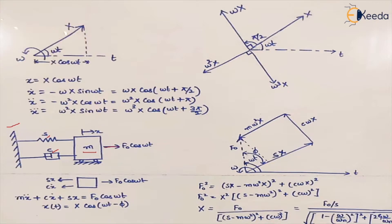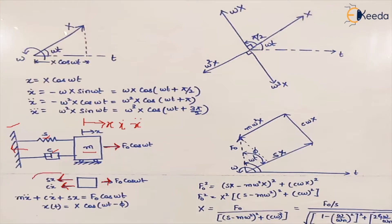If a harmonic force F₀ cos(ωt) is applied on this mass in this direction, displacement from the equilibrium position takes place in this direction, and this is also the direction for velocity and acceleration. Drawing the free body diagram, the spring force acts in the opposite direction and the damping force also acts in this direction. The part of force transmitted to the ground is basically a factor of these two forces.